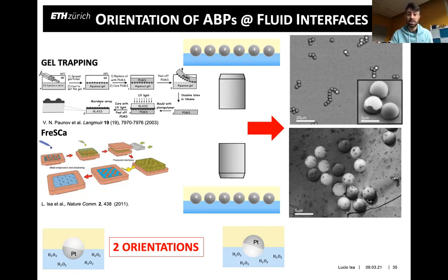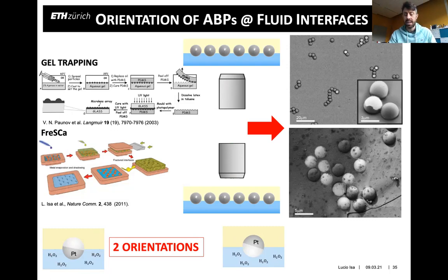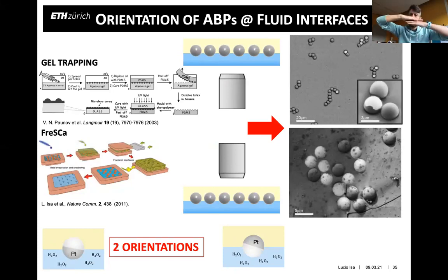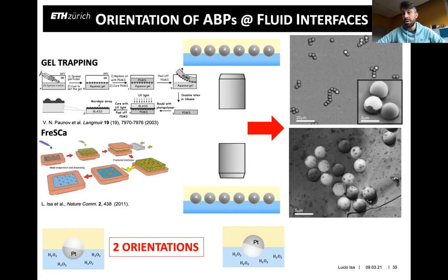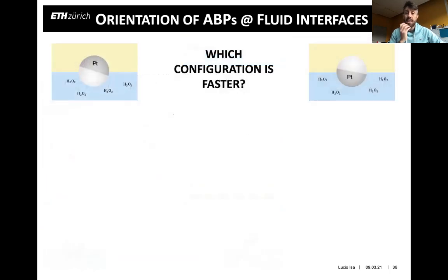The two orientations arise from different contact angles on each side: the polystyrene contact angle is about 110–120 degrees, while the platinum side is slightly lower. Ideally the Janus boundary would be perfectly parallel to the interface with polystyrene on top and platinum below, but particles can also adsorb in the wrong orientation — a metastable configuration. Switching between configurations is hindered by contact line pinning. The question is which configuration corresponds to the faster population and which to the slower.